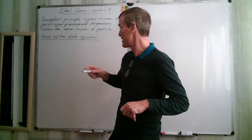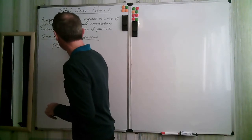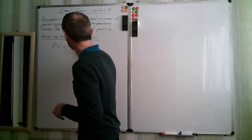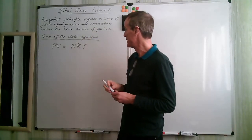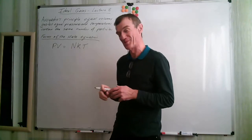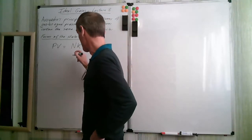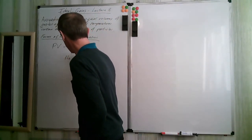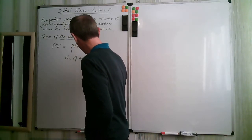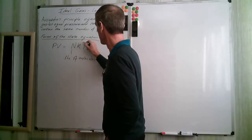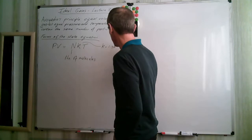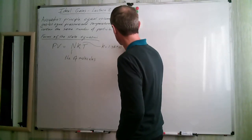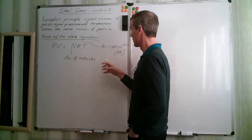The first form is PV = NKT, where P is pressure, V is volume, T is thermodynamic temperature, N is the number of molecules or particles, and K is Boltzmann's constant — K equals 1.38 times 10 to the minus 23 joules per Kelvin. This form connects the microscopic and macroscopic quite nicely, but we have very large numbers: N is very big and K is very small, so it's not ideal for engineers.